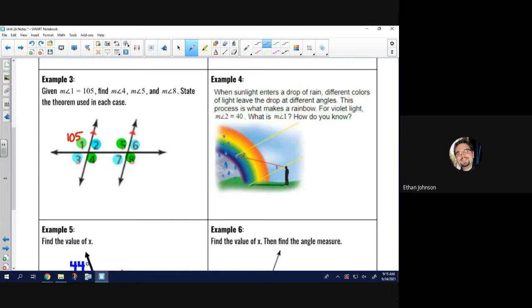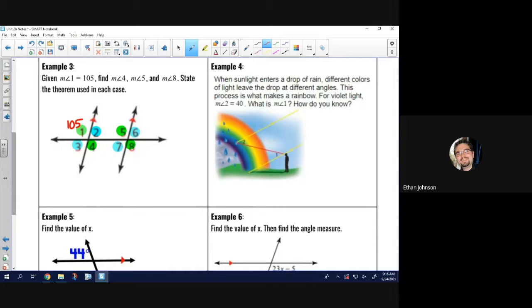So, first it says measure of angle 4. While angle 4 is down here, same color as the 105. So, it also has to be 105. Same color. The relationship. Angle 1 is congruent to angle 4 because of vertical angles.